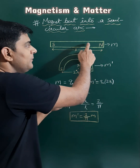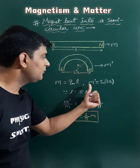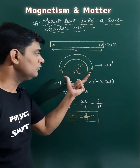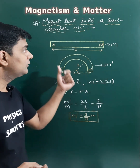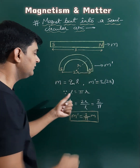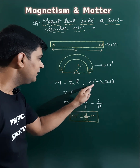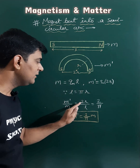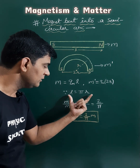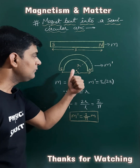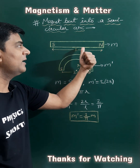The magnetic dipole moment m for the original case is qm into l. Similarly, the magnetic dipole moment m dash will be qm into 2r. When we relate l and r, the total length equals half the circumference of the circle, which equals pi r. Substituting this and finding the ratio m dash upon m gives 2r upon l, which equals 2 upon pi. So the magnetic moment of the bent magnet equals 2 upon pi times the magnetic dipole moment of the original magnet.